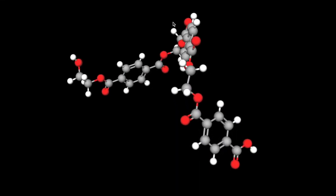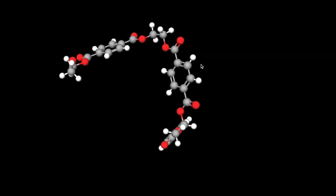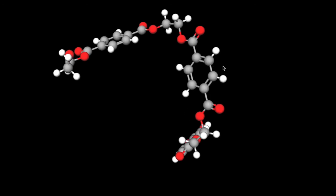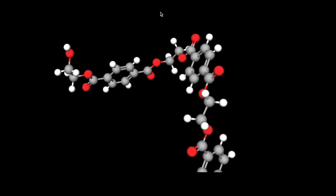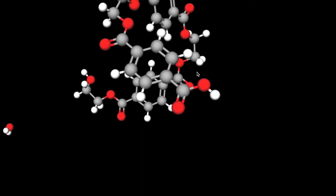When we look at the ball and stick model of PET, the ring structure that is repeated through the polymer is very noticeable. This ring structure is what gives the polymer strength and stiffness.